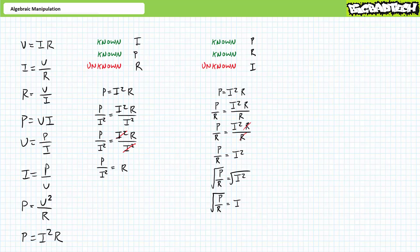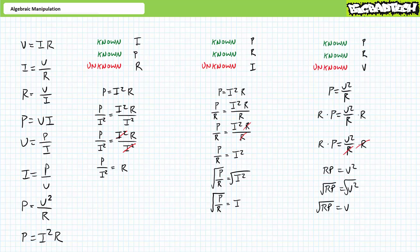Note that the terms P over R appear entirely underneath the square root operation. Finally, problem 4: solve for unknown V in terms of known P and R. Starting with P equals V squared divided by R, multiply both sides by R — R cancels on the right and we're left with V squared equals R times P. Again, this is not the final answer — we're looking for V, not V squared. Take the square root of both sides: V equals the square root of R times P. Note that the term P times R appears entirely underneath the square root operation.